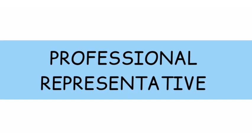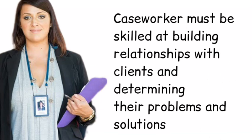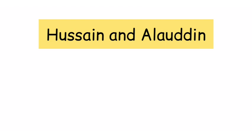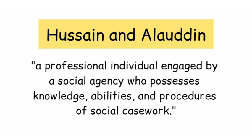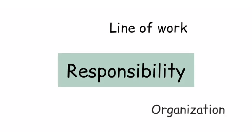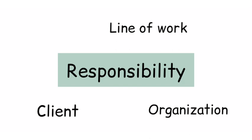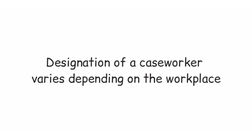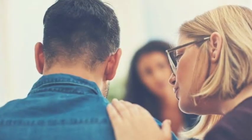The next element is the professional representative. A social caseworker is a professional representative who must be skilled at building relationships with clients and determining their problems and solutions. Hussain and Aladin define a social caseworker as a professional individual engaged by a social agency who possesses knowledge, abilities, and procedures of social casework. The social caseworker has responsibilities to his line of work, his organization, his client, and himself. The designation of a caseworker varies depending on the workplace, such as medical caseworkers, mental caseworkers, and so on.